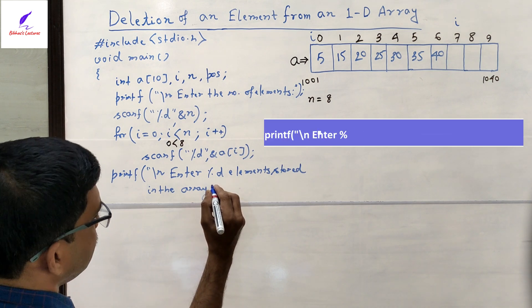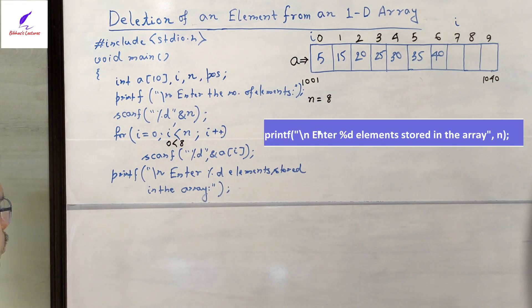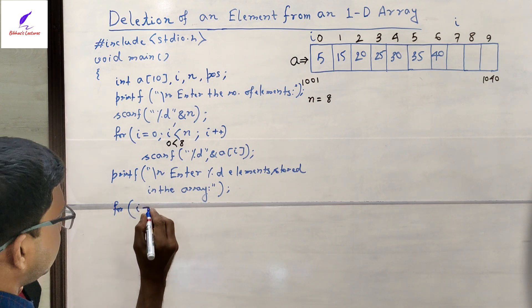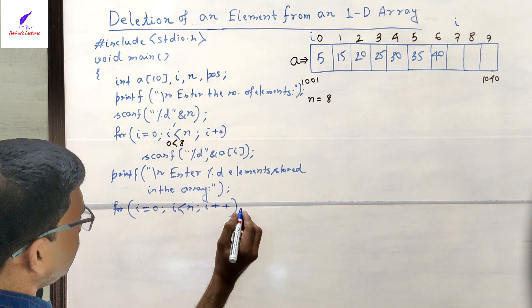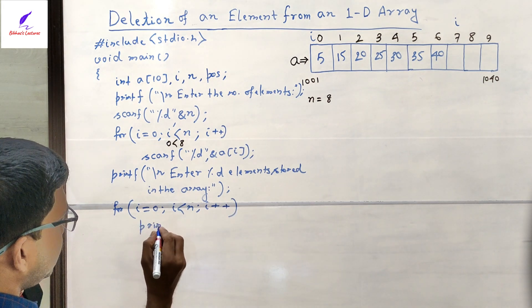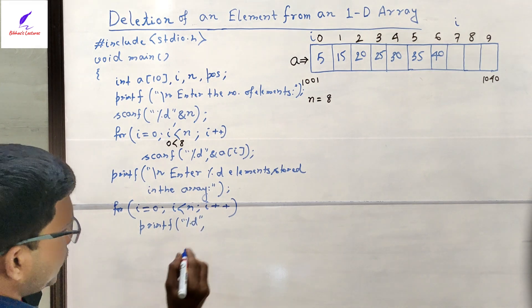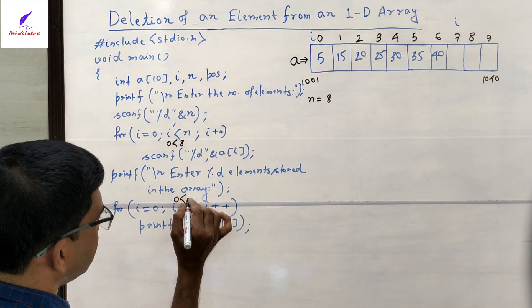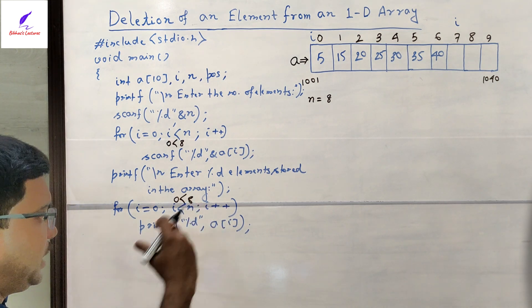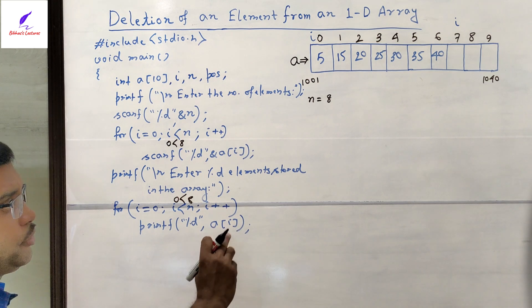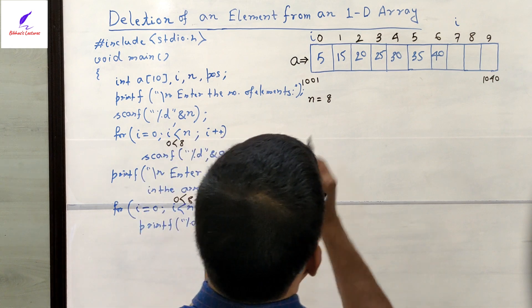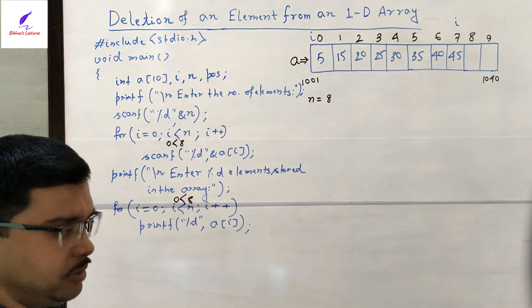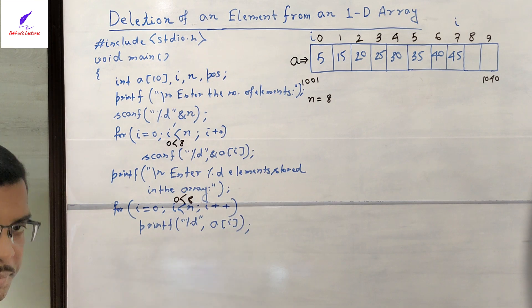We execute the for loop again: for i = 0; i < n; i++, calling printf to print the value of a[i] each iteration. With n = 8, i goes from 0 to 7, printing all the stored values: 5, 15, 20, 25, 30, 35, 40, and 45 will all be printed on the output screen.